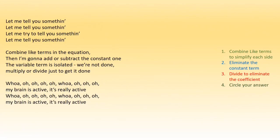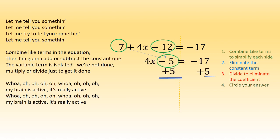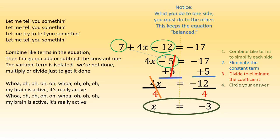Let me try to tell you something. To find like terms in the equation, I'm gonna add or subtract the constant one. That variable term is isolated, we're not done. I'll multiply or divide just to get it done.